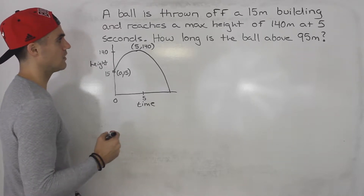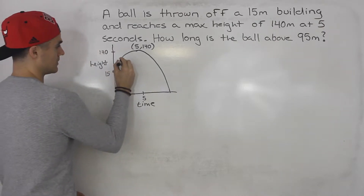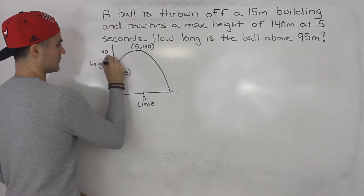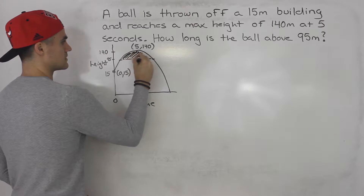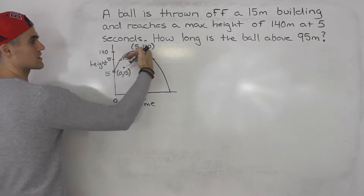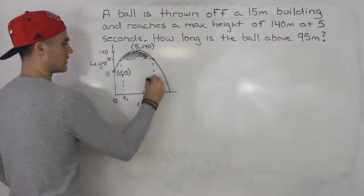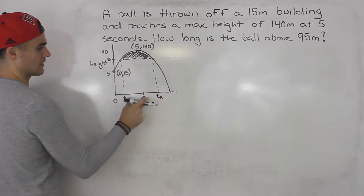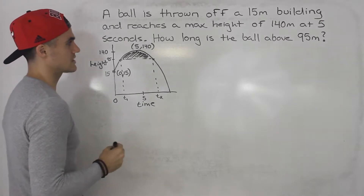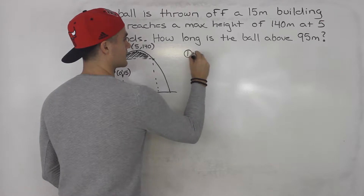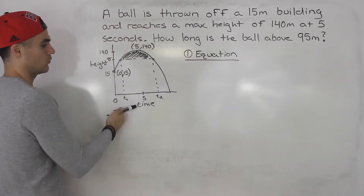The question is asking how long is the ball above 95 meters. So 95 meters is somewhere on the diagram — the ball is above 95 meters over a certain interval. We're going to have to solve for time one and time two, take the difference between those two times, and that gives us the interval of time the ball is above 95 meters. Step one: get an equation or function that models the height of the ball with respect to time.